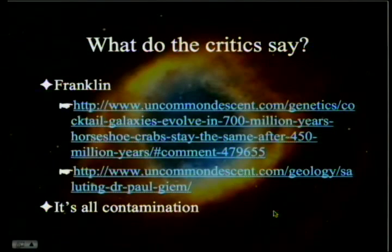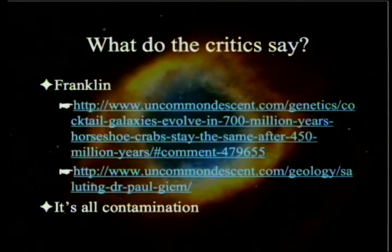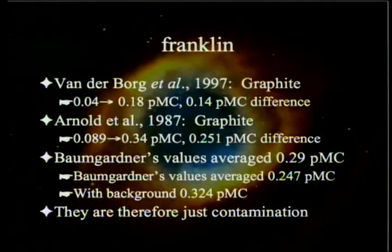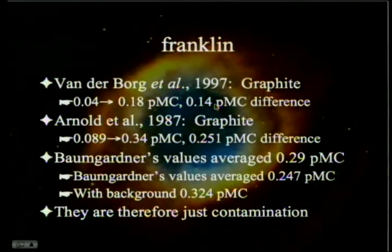That's the data, and it suggests there is, in fact, carbon-14 in fossil carbon. What do the critics say? The standard criticism — which Irv Taylor has been saying he'll publish — is that it's all just contamination. They tried to get rid of all that coal data. Franklin pointed out that in 1997, Van der Boer dated some graphite and got 0.04% modern carbon, but after processing got 0.18% — so processing itself presumably added 0.14% modern carbon.